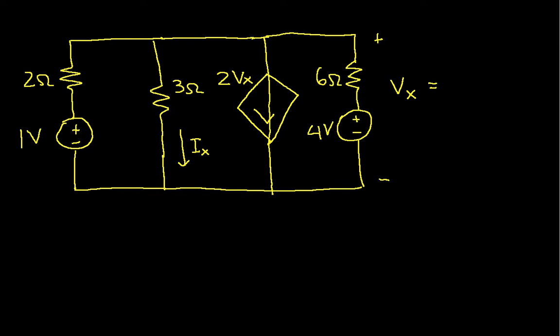Now when we do this, we don't set the dependent sources to zero. So we find Vx equal to Vx prime — the response due to the 1-volt source with the 4-volt source set to zero — plus Vx double prime, the response due to the 4-volt source with the 1-volt source set to zero. Similarly, Ix will be the sum of Ix prime plus Ix double prime.